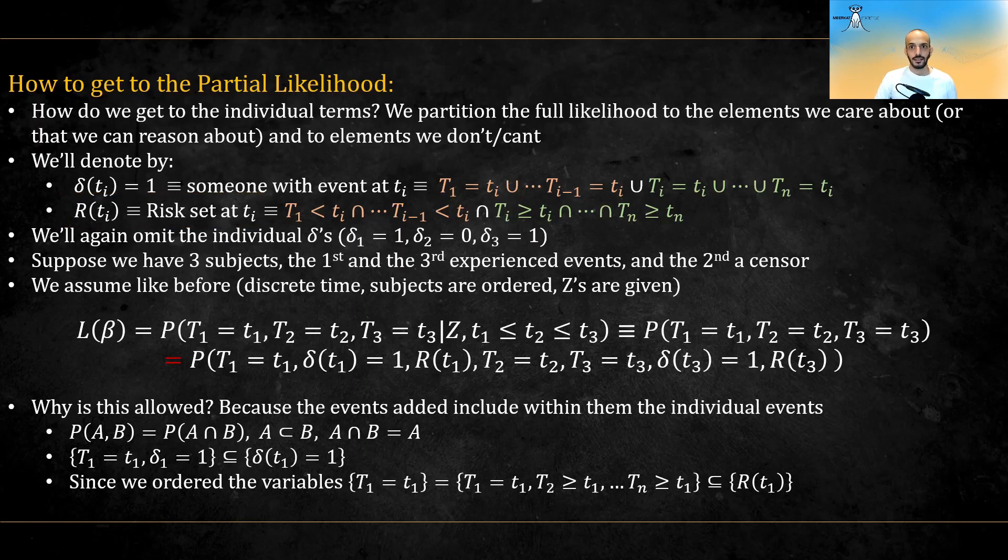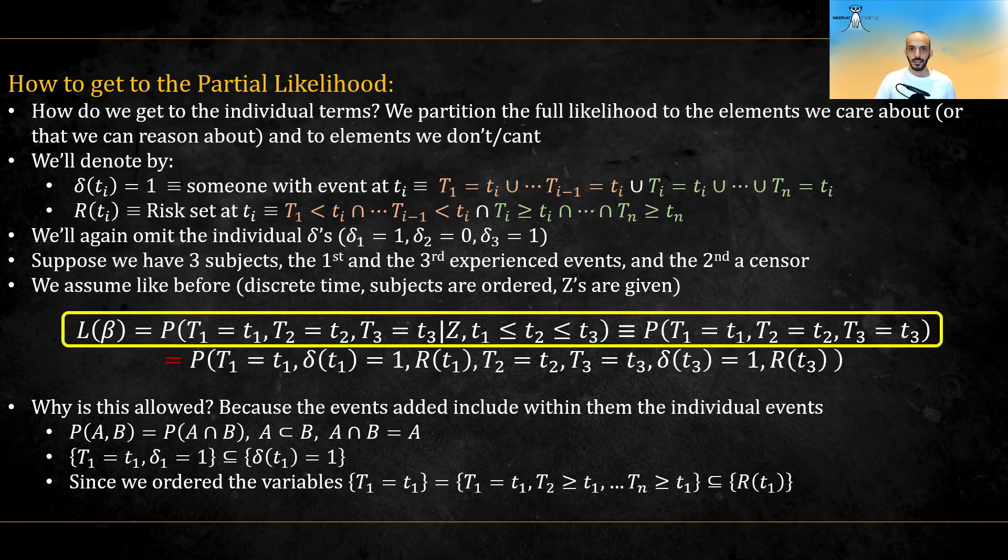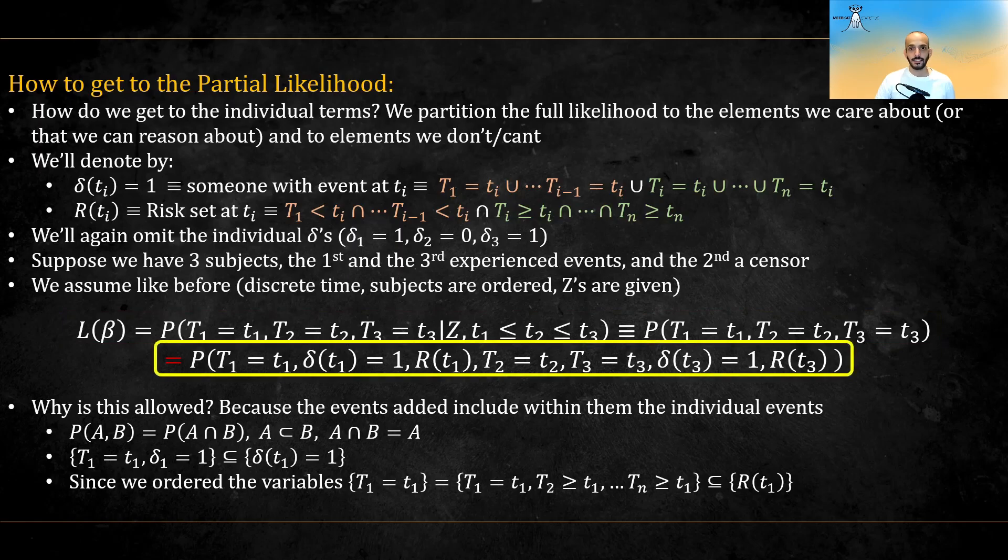Suppose we have three subjects, and that the first and third experienced events, while the second was censored. The full likelihood given these and that we ordered the times is equal to this, but we want to write it like this, by adding the risk sets and the general deltas. Why are we allowed to do so?